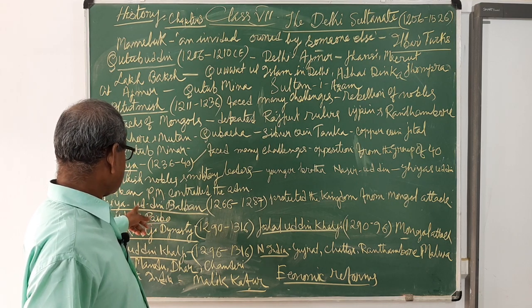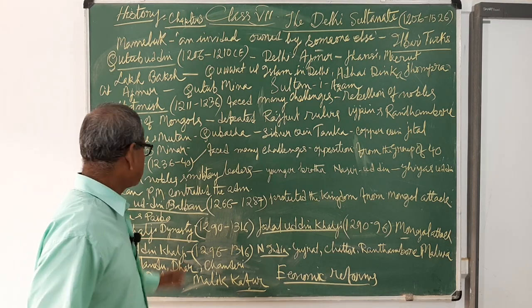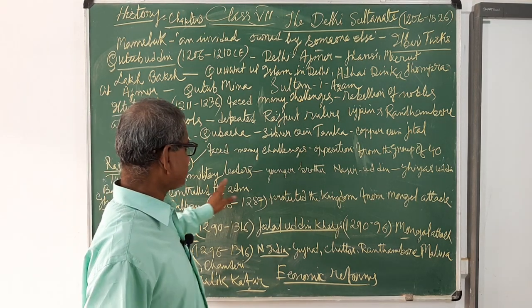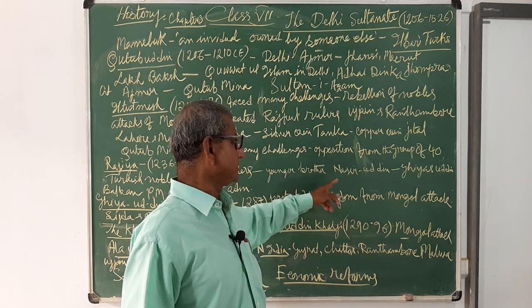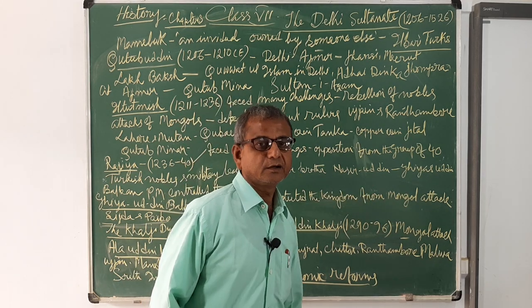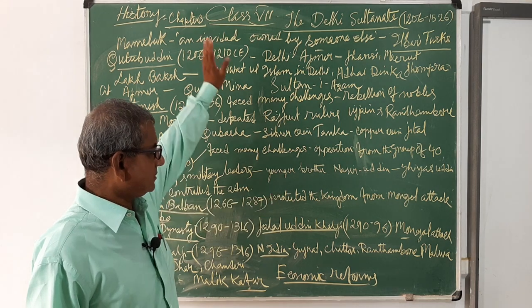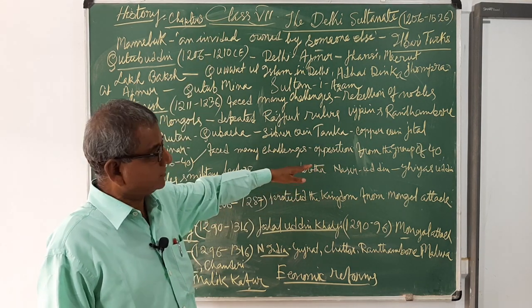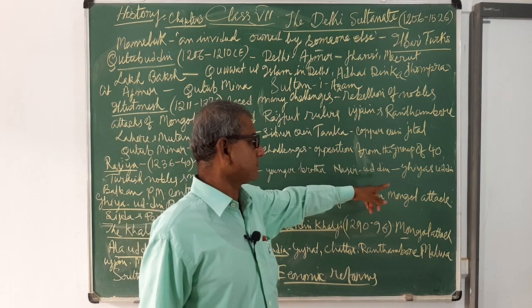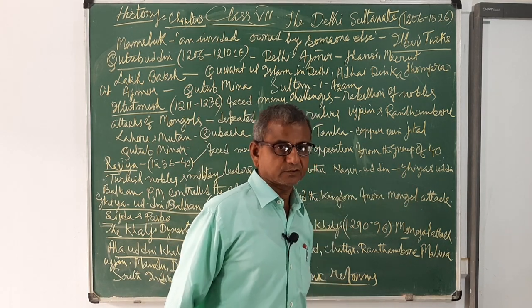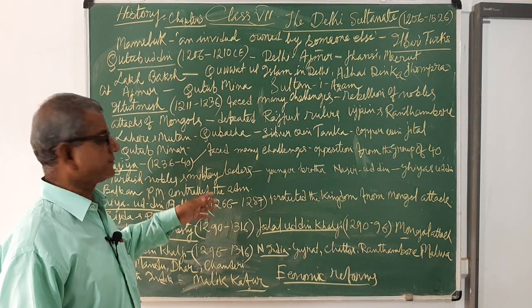After Razia's death, her younger brother Nasiruddin became the ruler. Nasiruddin was a very weak ruler, and the actual control was in the hands of his prime minister, Ghiyasuddin Balban, who controlled the political affairs of the kingdom.